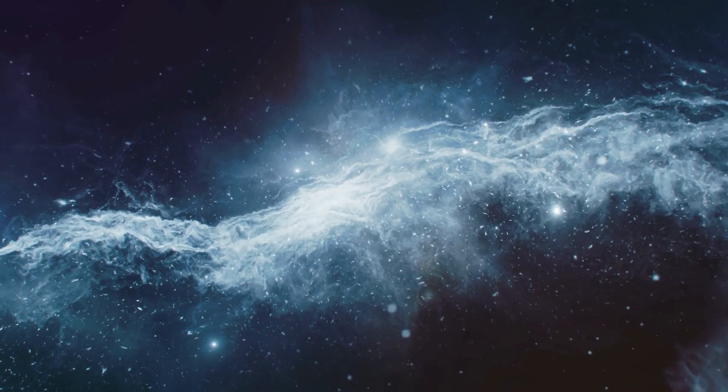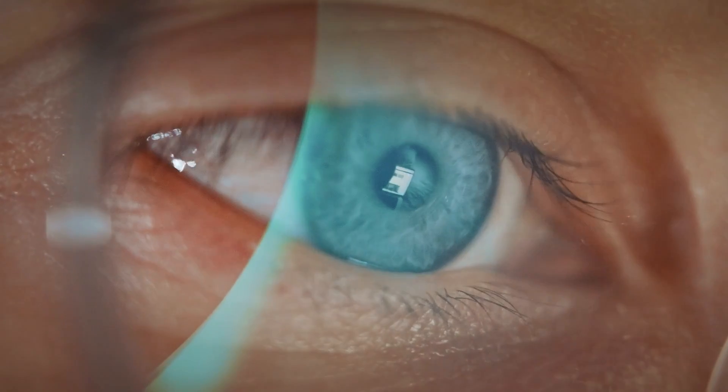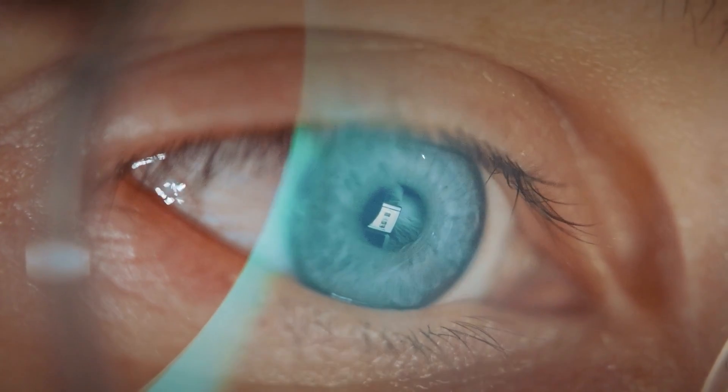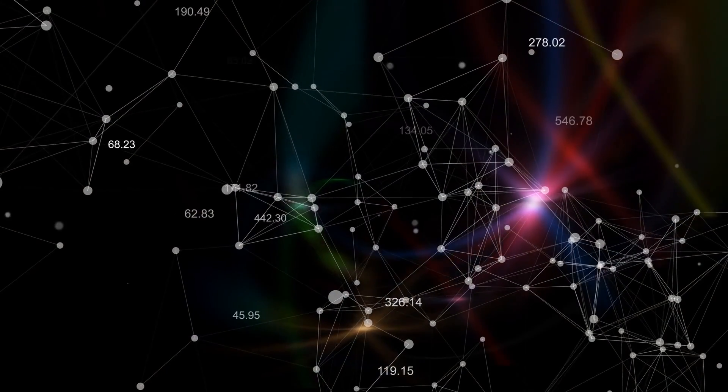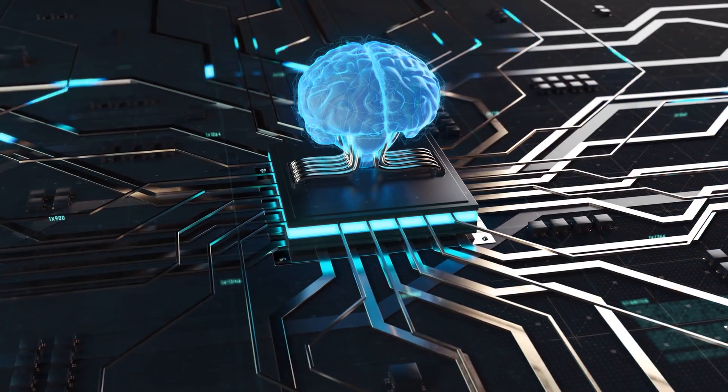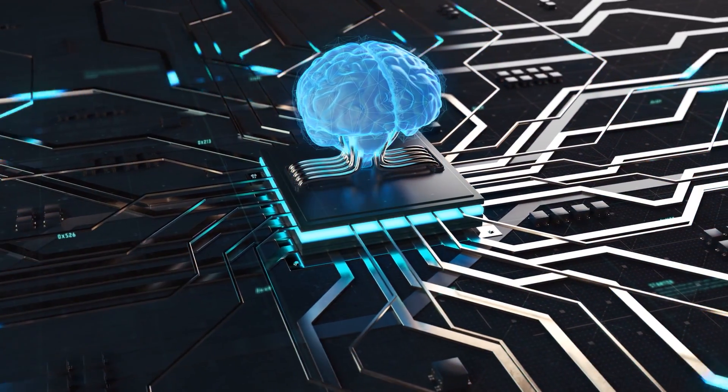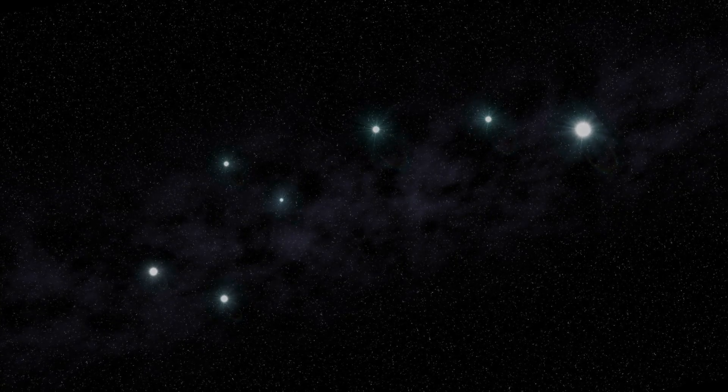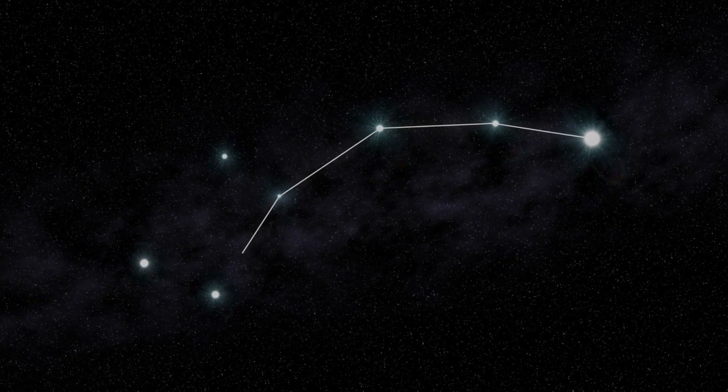But here's where the human element comes in: manual inspection. Giles believes that nothing is better at finding weird stuff than the human eye. This sentiment is echoed in their approach. Despite the advances in machine learning, it's the human capacity to spot anomalies and make intuitive connections that drives this search.